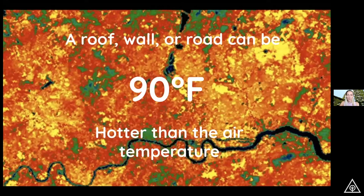At a roof or a wall, getting up to these really high temperatures — pavements, roofs, walls, when they sit in the sun, they can get incredibly hot in a way that vegetation and exposed water bodies don't get that hot.